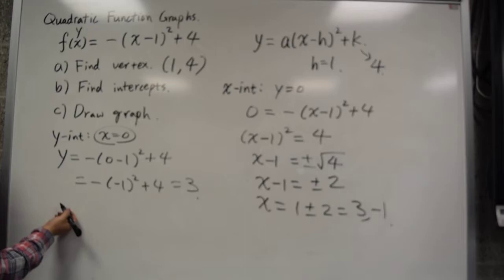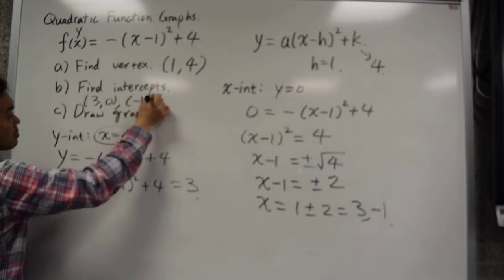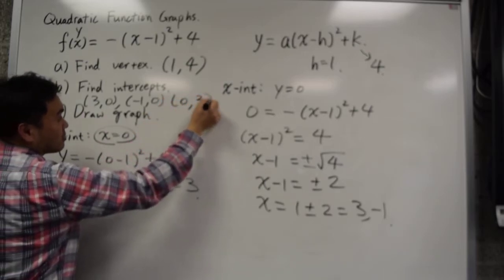So we found out that the intercepts are 3, 0, negative 1, 0. These are the x-intercepts. And for y, if you plug in 0, you get positive 3.